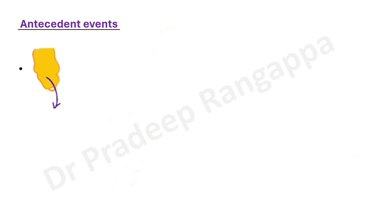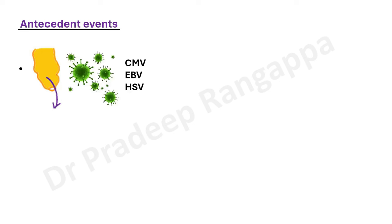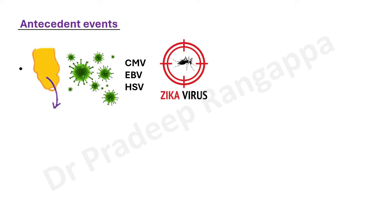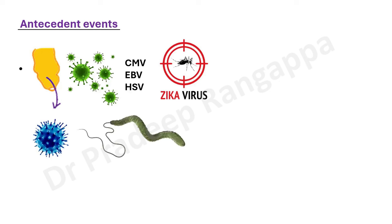For Guillain-Barre syndrome, there is always a trigger — an antecedent cause that triggers the autoimmune process. The commonest history we ask is whether they have had diarrhea, because Campylobacter jejuni has a high propensity for causing GBS. Then there are many viral infections like cytomegalovirus, Epstein-Barr virus, herpes simplex virus, Zika virus, and HIV — all known triggers for Guillain-Barre. Coronavirus is also postulated as one of the triggers. Among bacteria, Campylobacter jejuni causing diarrhea is the firmest culprit.